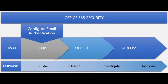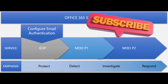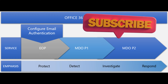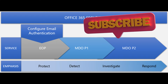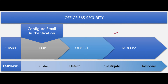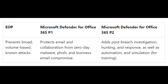EOP basically prevents broad, volume-based, known attacks. Plan 1 protects email and collaboration from zero-day malware, phishing, and business email compromise. Plan 2 adds post-breach investigation, hunting and response, as well as automation and simulation for end users.